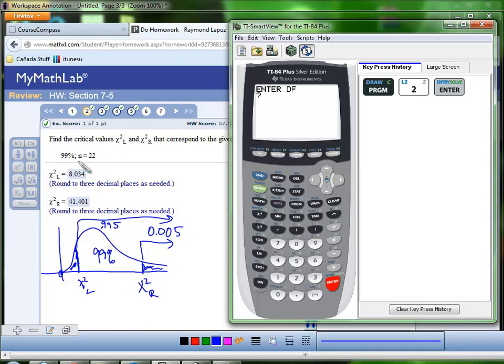They want the degrees of freedom. With a sample size of 22, our degrees of freedom is 21, enter. And it's going to ask you to confirm, do you want the chi-square critical value. You say yes or just press enter.